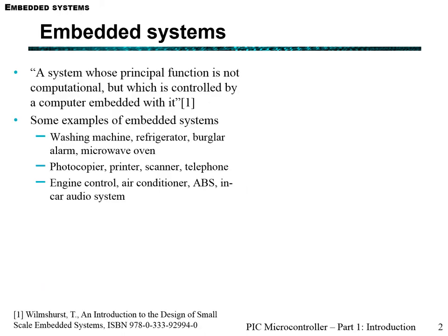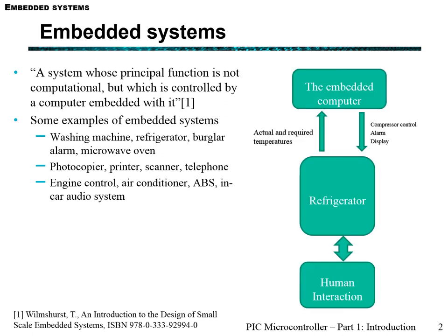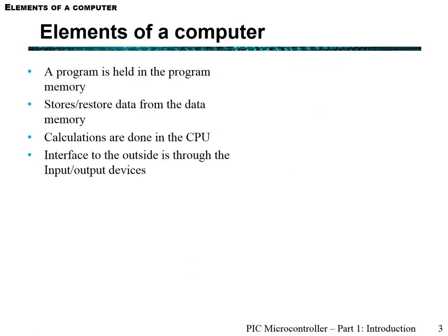Embedded systems are used in our everyday lives. Key examples include photocopiers, washing machines, and specifically your fridge. Your fridge has an embedded computer which reads the temperature and what's required, then controls the compressor to cool down or heat up the fridge. A computer is an example of an embedded system which runs a program, stores and retrieves data from memory, and performs calculations in the central processing unit.